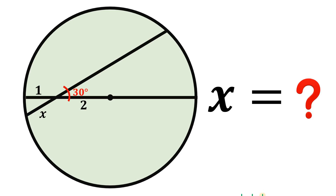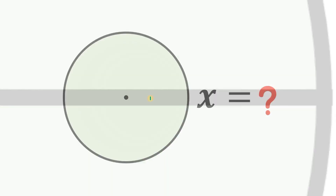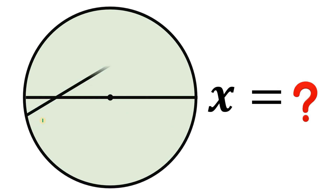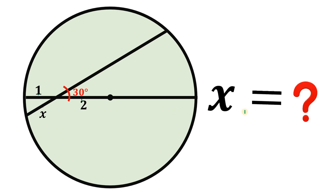Can you solve this geometry challenge? Here's the question. Given this circle, let's draw its diameter and another chord. Now this angle right over here is simply equivalent to 30 degrees. This segment is just one unit, this other segment is two units, and this segment is X. The question is: what is the length of segment X?